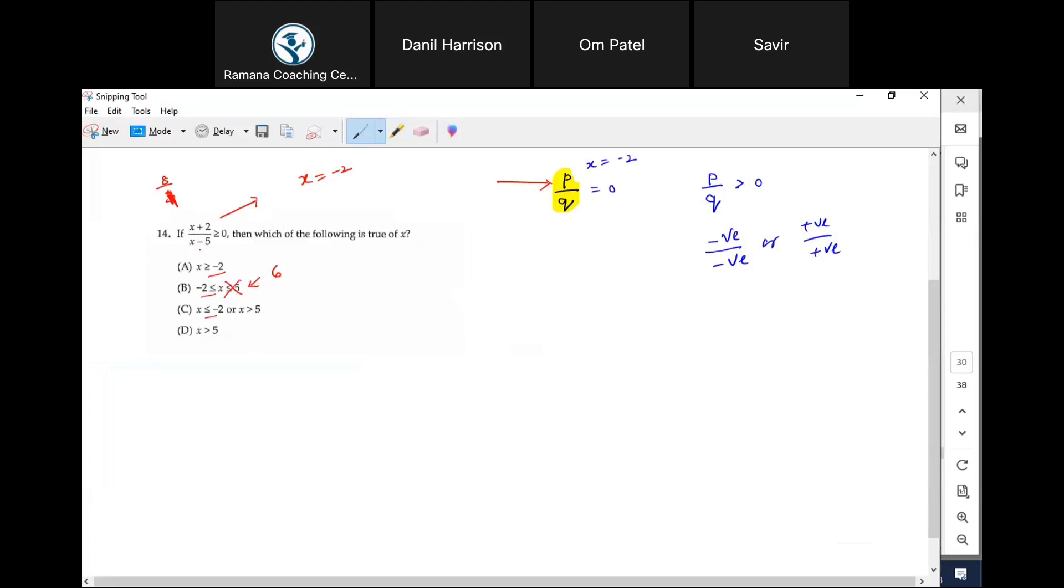Can x be five? No. So here he is not talking about x equals negative two, so this is also gone. Between these two now, this and this.